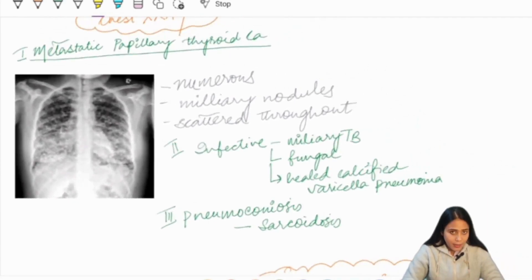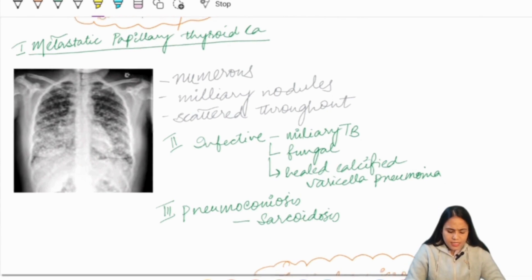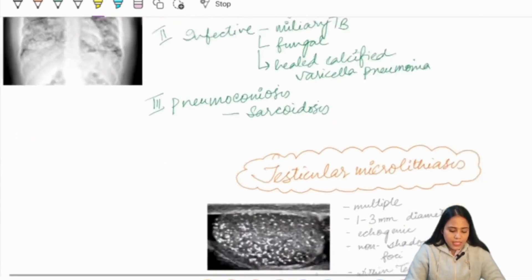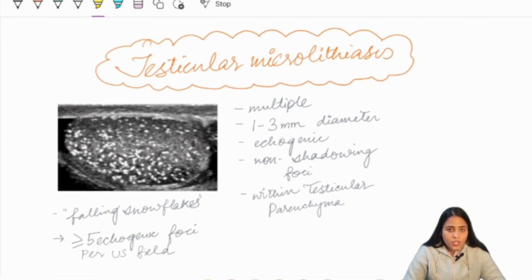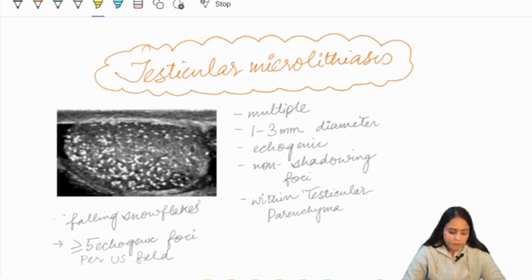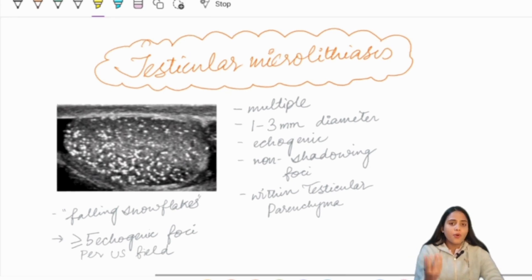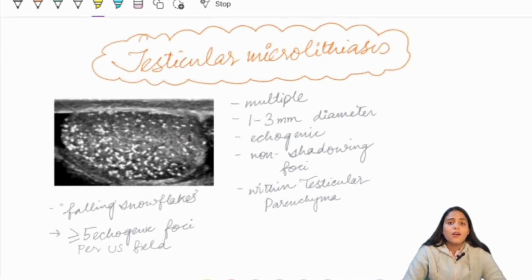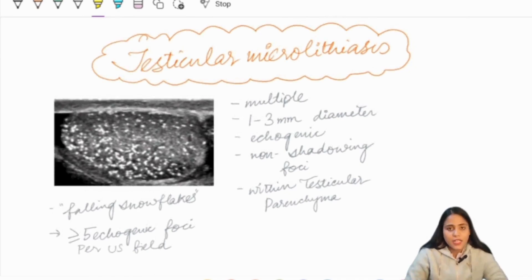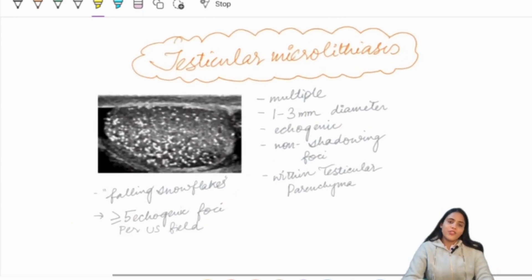Last is testicular microlithiasis, where we see multiple echogenic non-shadowing foci within the testicular parenchyma. They measure around one to three millimeters and are not static — they appear to fall down like snowflakes. The presence of five or more such echogenic foci is diagnostic of the condition. That's all for today; if you enjoyed, do comment below.